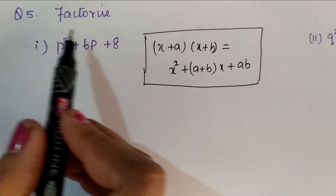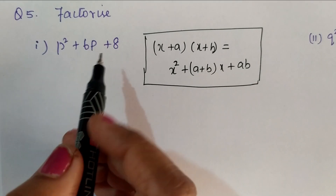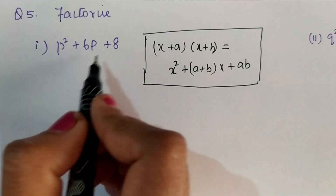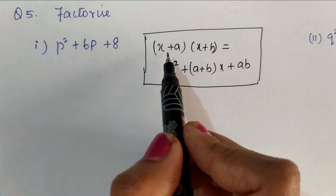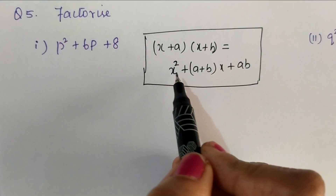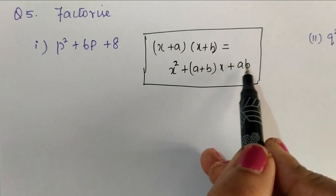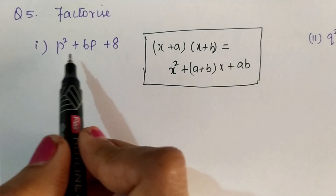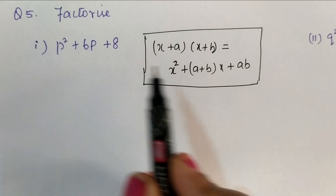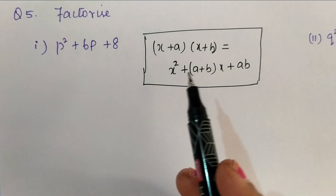Next question number 5: Factorize p square plus 6p plus 8. Here we can use the identity x plus a into x plus b equal to x square plus a plus b into x plus ab, because 8 is not a perfect square, so in such cases we can use this identity.